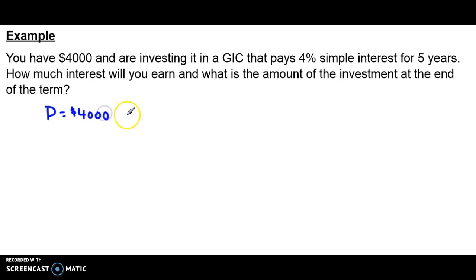The rate of interest is 4%, or as a decimal, 0.04. And to get that, we're going to take our percent and divide it by 100 to convert it to a decimal.